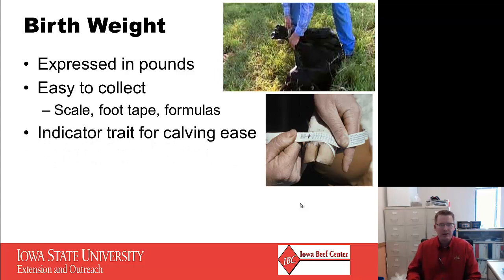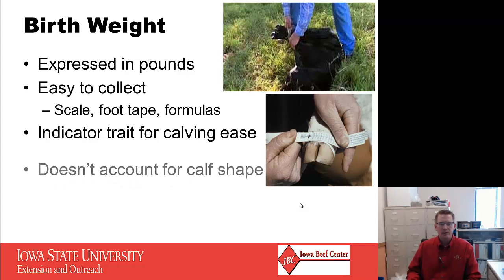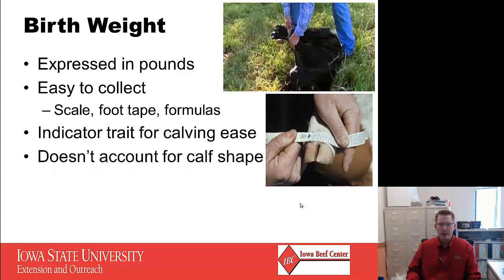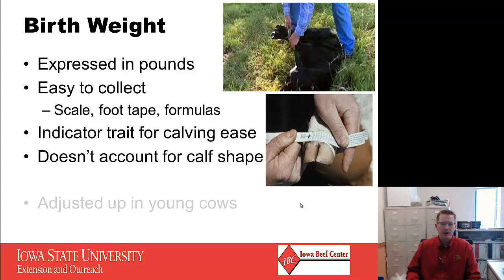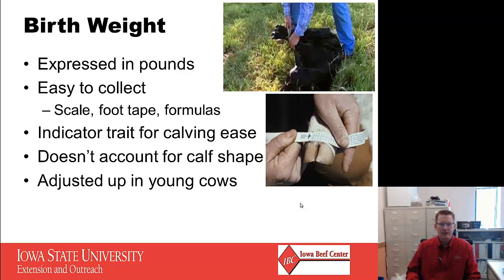Birth weight is an indicator trait for calving ease. Calving ease is obviously our goal, and what that calf weighs at birth is one of the ways we measure it. But it's important to understand that birth weight does not account for calf shape — that means both calf length and calf width, including head size, foot size, and things of that nature. We're actually discounting calves that are long-bodied when using the birth weight EPD trait only.